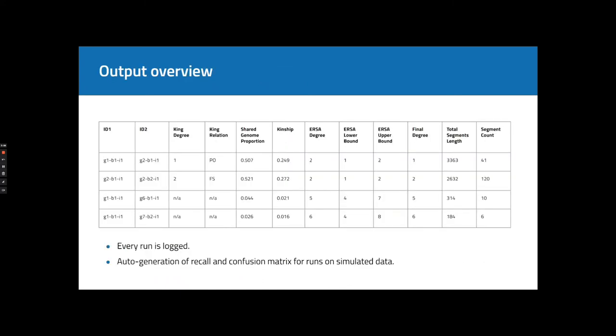In the end, let's discuss a few more technical details. There is a sample from the main Grape report. It shows King degrees and kinship if King was invoked. Grape also produces ERSA confidence intervals and some IBD segment statistics.